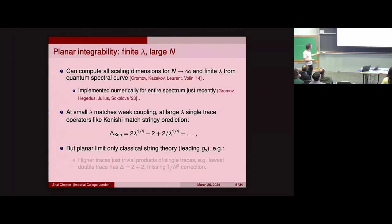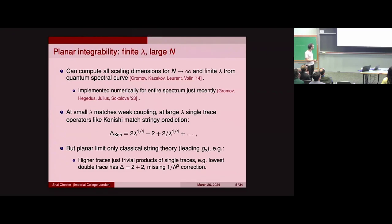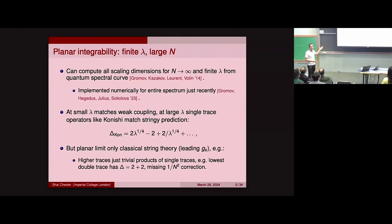Integrability is very powerful, but its limitation is that it's really only in the planar limit — leading order large N. From the bulk perspective, integrability is telling you how to solve classical string theory, but not quantum string theory. For instance, if you look at higher trace operators in this planar limit, they just trivially reduce to products of the component single traces. So if you wanted to compute the leading 1/N correction to the double trace operator, we simply don't have access to that in the strict planar limit — we just get 2+2=4.